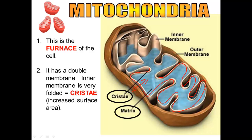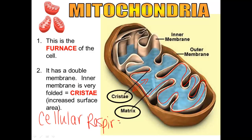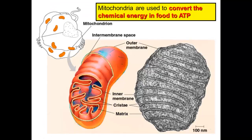The reaction that happens across the cristae is cellular respiration — you should remember that from Science 10. What the mitochondria does is it converts the chemical energy that we eat, which is sugar, and converts that into ATP.